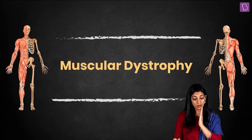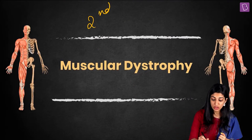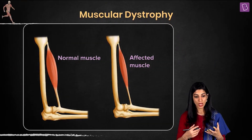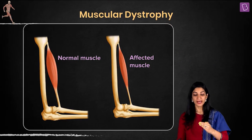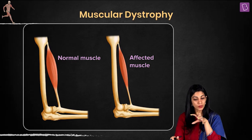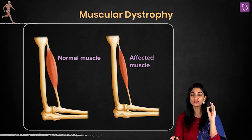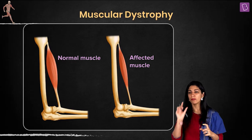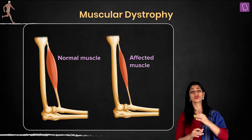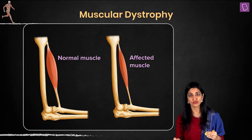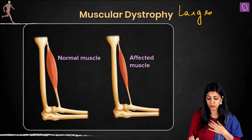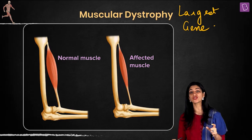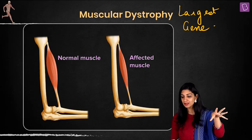The next disease is muscular dystrophy, which is genetic in nature. Genetic diseases are some of the most interesting topics you will study in class 12th. Children born with muscular dystrophy have a genetic defect. It involves the largest gene in the body, and if that gene undergoes mutation, the child does not survive — the maximum lifespan is 8 to 12 years.